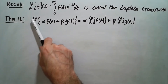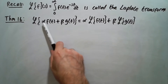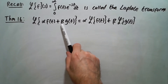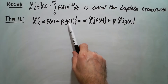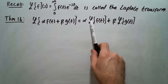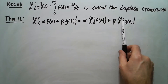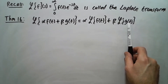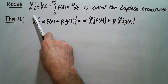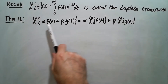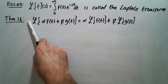It means that the Laplace of alpha f plus beta g is the same as alpha times L of f plus beta times L of g. So pretty much the Laplacian distributes inside and the constants come out.